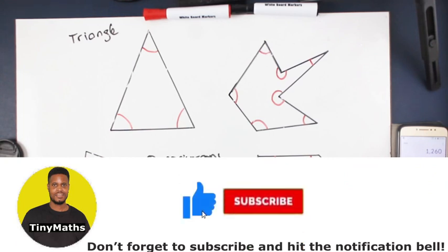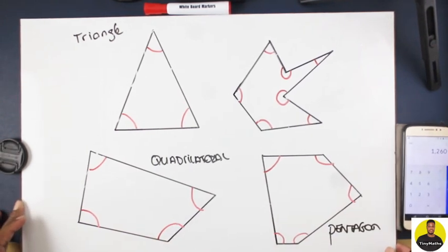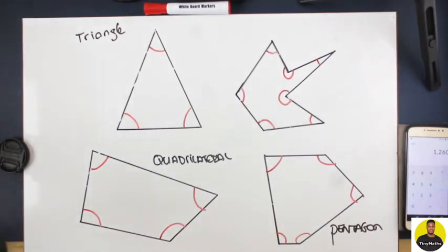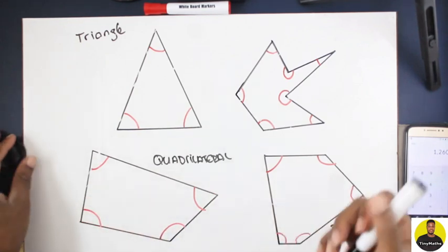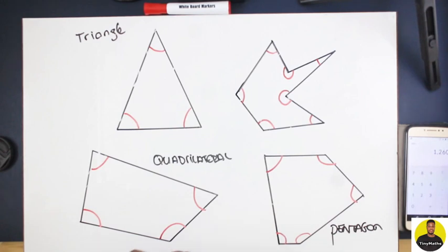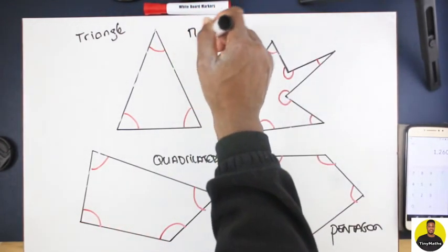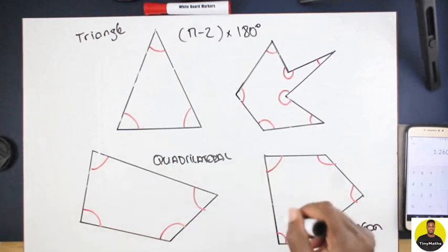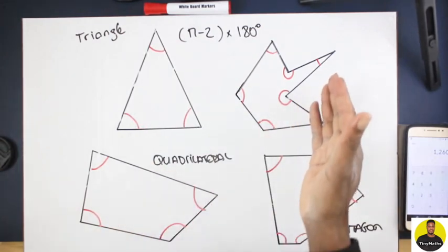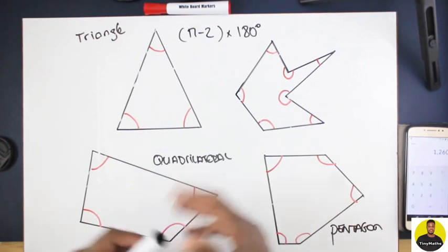Hey guys, we are back with yet another video on angles. Tonight — I say tonight because it's nighttime where I am — we are going to talk about why the formula n minus 2 times 180 gives you the sum of all the angles in any polygon. All of these are polygons, even the strange-looking one. We're going to find out what n minus 2 means and why it helps us understand what all the angles in a polygon are.